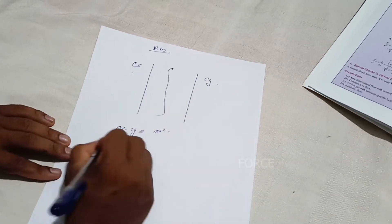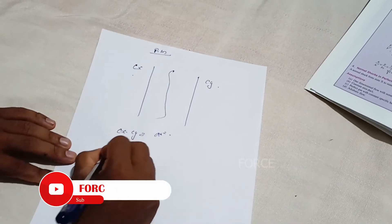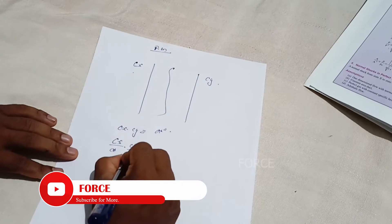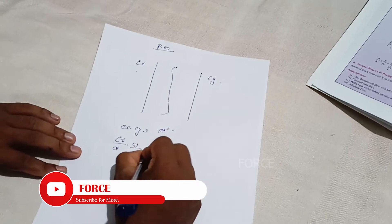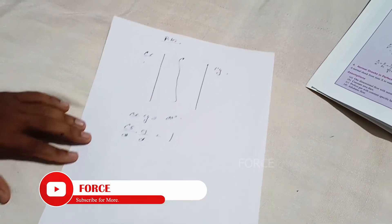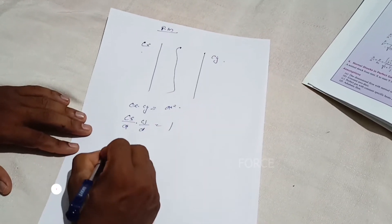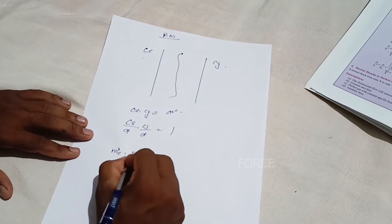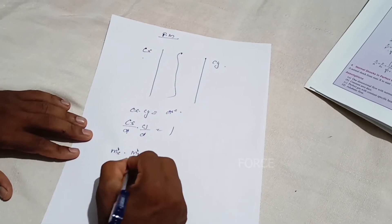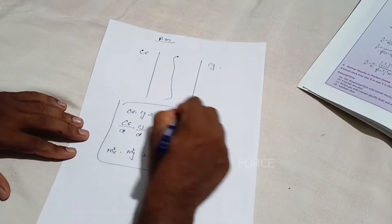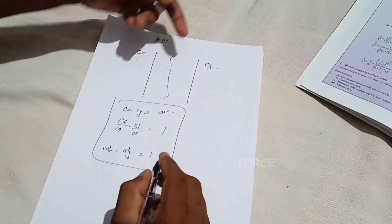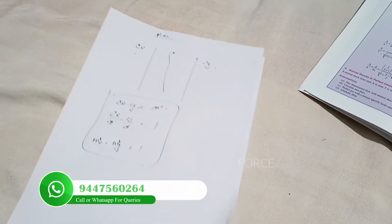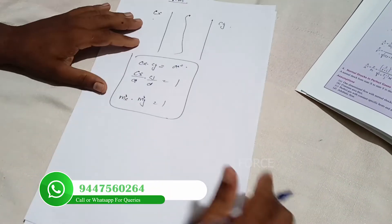Let's denote CX by S star. CY by S star is equal to 1. Let's take a look at C by A. M star of X into M star of Y is equal to 1. This is the continuity equation.